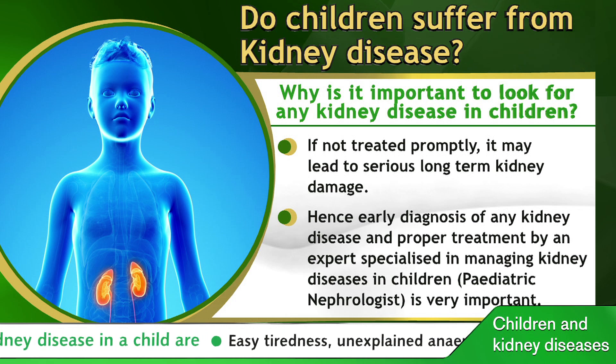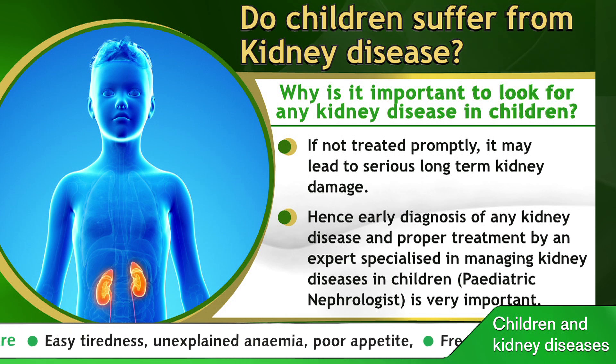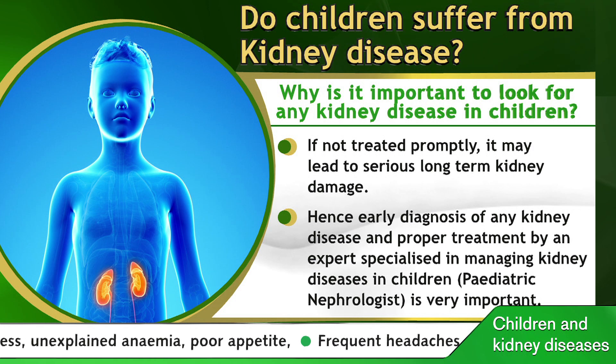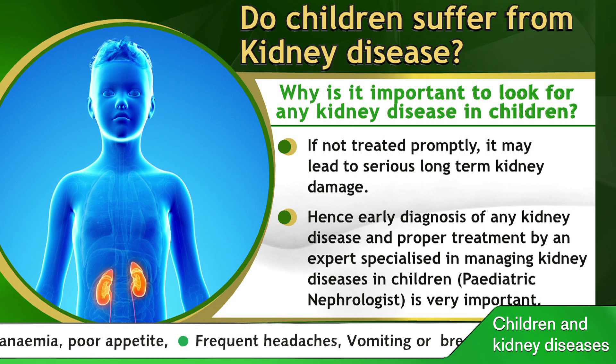Certain children with kidney disease can also have abnormal looking urine color, like red colored urine or cola colored urine, which could point to a kidney disease.